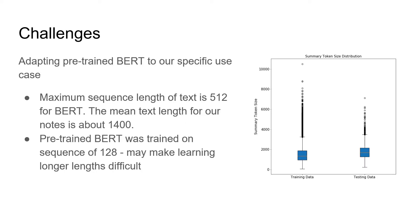Adapting the pre-trained BERT model for this specific use case was challenging. The maximum sequence length for any BERT model is 512 tokens, but the mean text length for our notes is about 1,400. This meant a lot of text was truncated — simply cut off at the end with no logical backing — removing significant contextual information that is critical for BERT to predict ICD-9 codes. Additionally, the pre-trained BERT was trained on a sequence length of 128, whereas our fine-tuning used 512, and this discrepancy may make learning longer sequences more difficult.